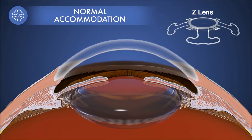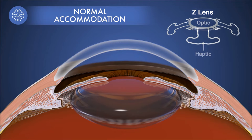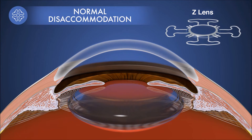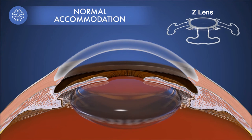Our Z-lens intraocular lens is built to mimic this movement. In the Z-lens resting state, the optic is vaulted forward by haptics that are angled backwards. As the ciliary body relaxes, zonules pull the haptics flat, moving the optic backwards. When the ciliary body contracts, the haptics vault the optic forward.